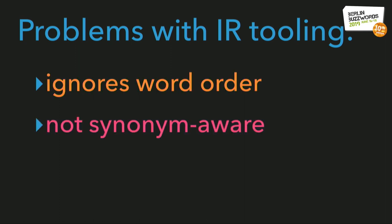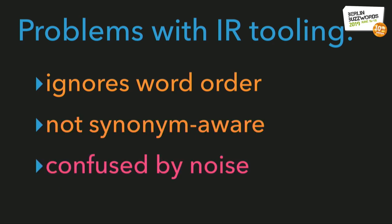IR tools also tend not to be aware of semantic synonyms. So if we query for 'read in' and the documentation says 'parse,' our search system will miss relevant hits. And IR tools tend to be confused by noise—for instance, the query 'get the content of an input stream as a string using a specified character encoding' has a relevant token 'specified in character,' which might lead our search system to produce false positives.